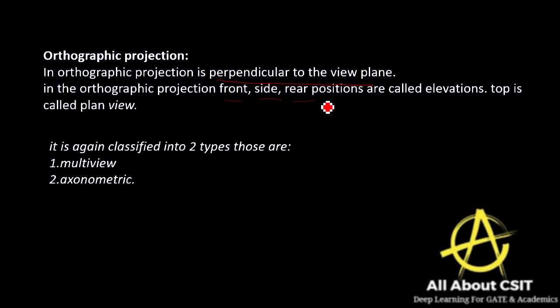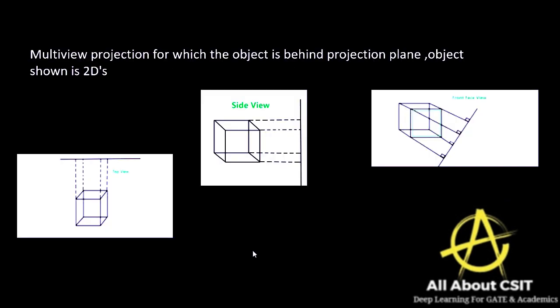In orthographic projection you can see the front, side, and rear positions — all called elevations. The top is called the plane view. It is classified into two types: multi-view and axonometric view. Multi-view means front, top, and back views. In multi-view projection the object is behind the projection plane and is shown in 2D.